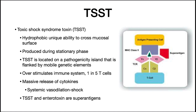TSST is a hydrophobic protein and has a unique ability to cross mucosal surfaces. S. aureus produces it during stationary phase, and the gene is present on a pathogenicity island that is flanked by mobile genetic elements, so it can actually move between S. aureus species. The S. aureus would grow only at the tip of the tampon but release the toxin into the bloodstream, where it would then have its effect.